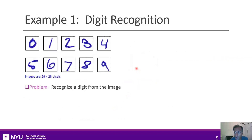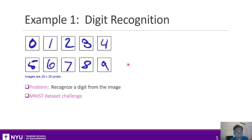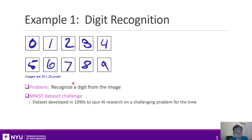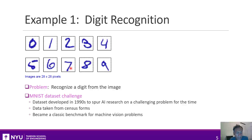Let's go through a few different examples of when machine learning might be used. This is a very classic problem in machine learning: recognizing a digit from an image. You're given a handwritten digit and you have to write a computer program that will tell you whether it's a five, six, seven, and so on. These digits are taken from an extremely common dataset called the MNIST dataset, developed about 30 years ago in the 1990s. The data was taken from handwritten census forms and became a classic benchmark.